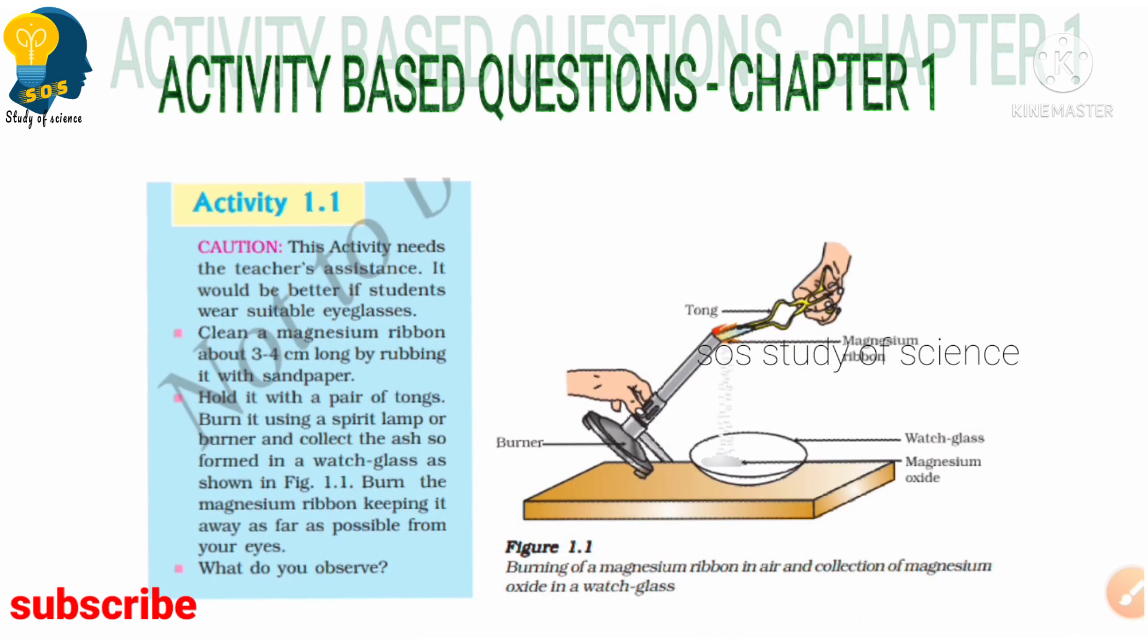The first activity which is given in your textbook is Activity 1.1, which is based on the burning of magnesium ribbon in air and collecting of magnesium oxide in a watch glass. Students, I hope you all have seen this activity.